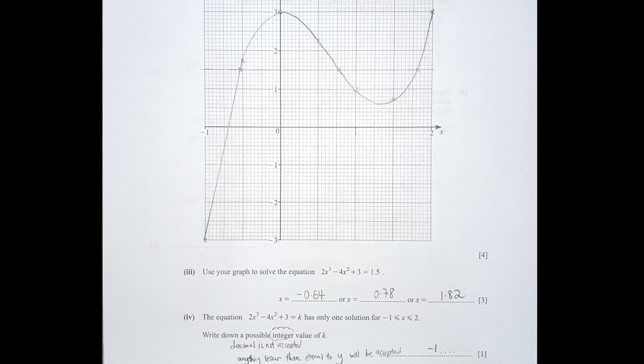For part two, the equation 2x cubed minus 4x squared plus 3 equals k has only one solution. Write down the possible integer values of k. The keyword here is 'integers,' and the range will be from negative 1 to 2. Any point below 0.55 will be accepted, but because the keyword is integer, the result must be a whole number. So the possible integer value is negative 1; zero is also accepted.